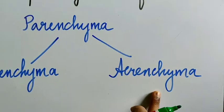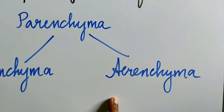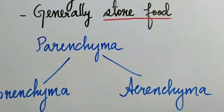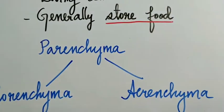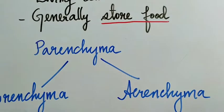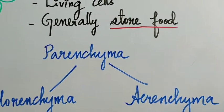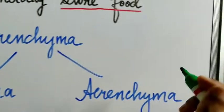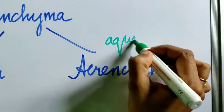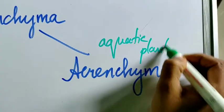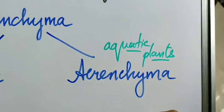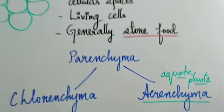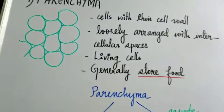Sometimes parenchyma is filled with air cavities, giving the cells the ability to float — a property called buoyancy. Such parenchymatic tissue containing air cavities is found specifically in aquatic plants and is called aerenchyma. That is all about parenchyma.